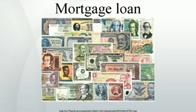The charge to the borrower depends upon the credit risk in addition to the interest rate risk. The mortgage origination and underwriting process involves checking credit scores, debt to income, down payments, and assets. Jumbo mortgages and subprime lending are not supported by government guarantees and face higher interest rates. Other innovations described below can affect the rates as well.